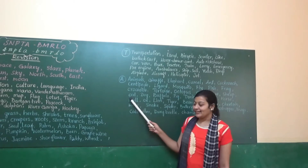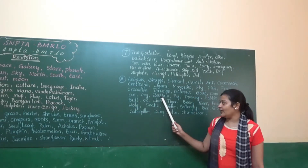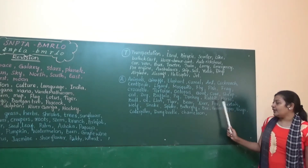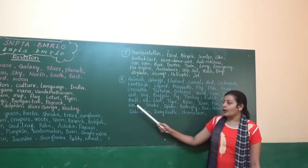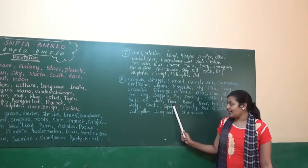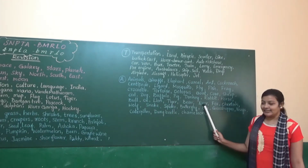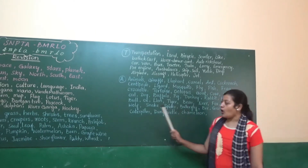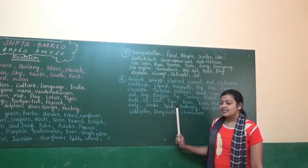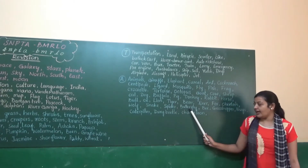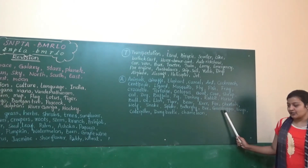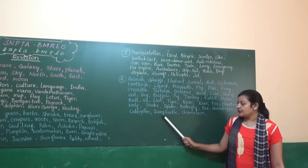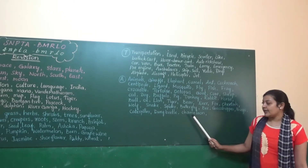Cat, dog, buffalo, pig, donkey, rabbit, horse, bull, ox, lion, tiger, bear, deer, fox, cheetah, snake, spider, butterfly, bee, grasshopper, bugs, caterpillar, dung beetle, chameleon.